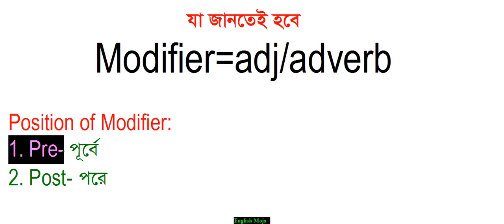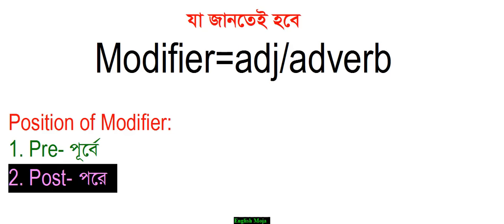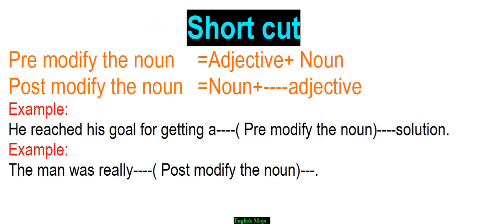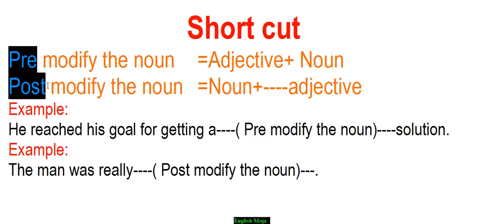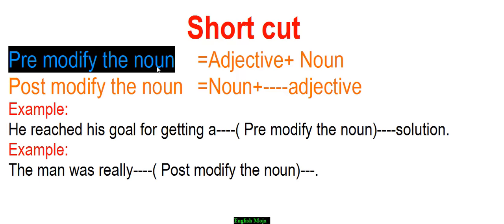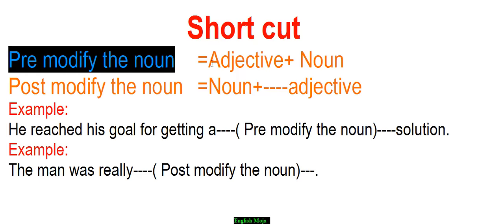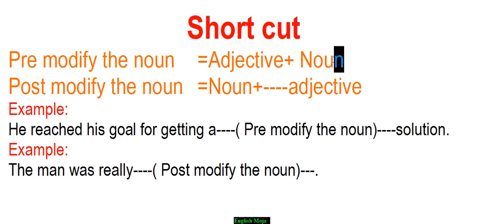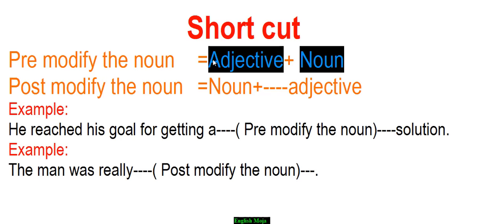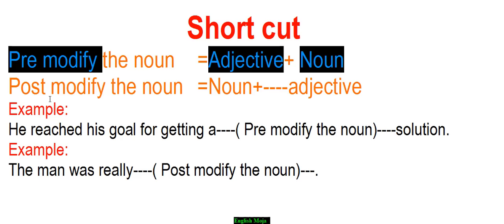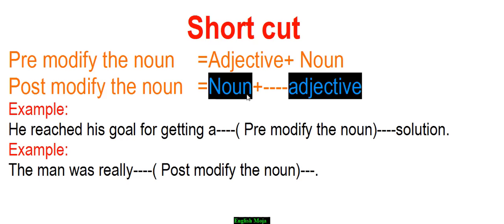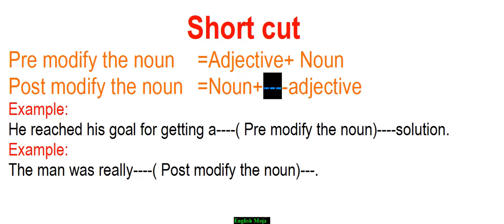The first shortcut technique: to introduce pre and post modification. Pre-modified nouns use adjective before the noun. Post-modified nouns place more adjective after the noun. If you see noun followed by adjective, you can use it as a noun in both pre-modified or post-modified form.